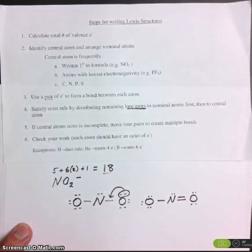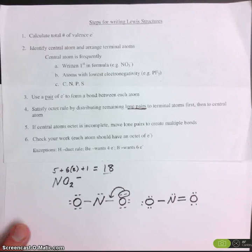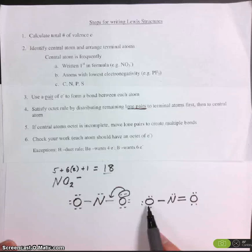And the last step, check to make sure each one has 8. And yes, it looks like each atom has 8 valence electrons.